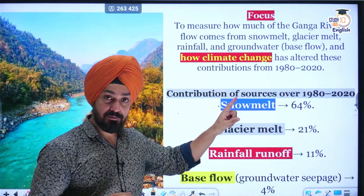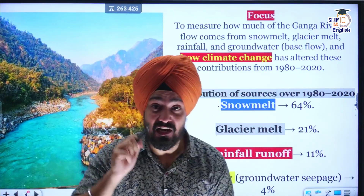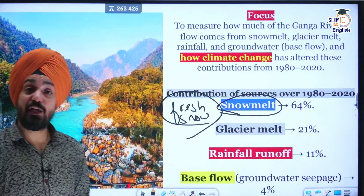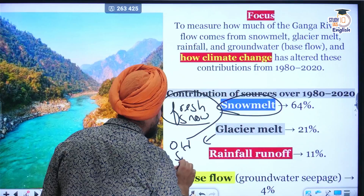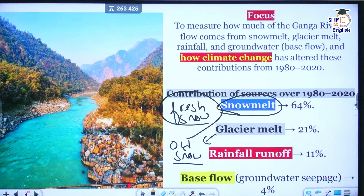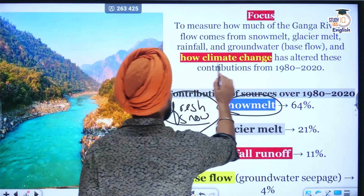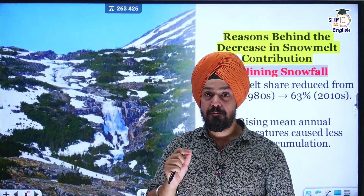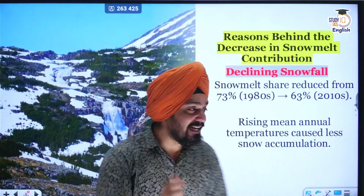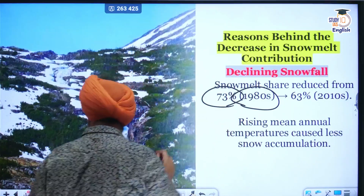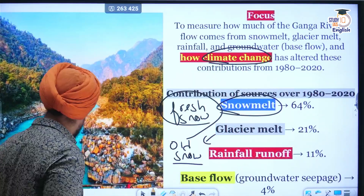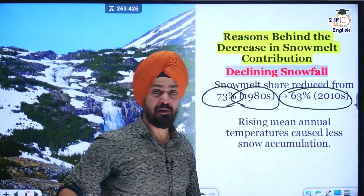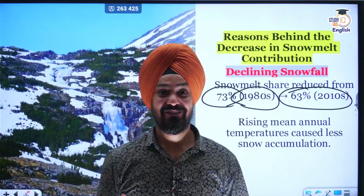The major source — 64 percent of water in river Ganga — comes from the melting of fresh snow, and 21 percent comes from the melting of old snow. Climate change has drastically altered this contribution. The researchers revealed that snow melt contribution is declining. In the 1980s, the snow melt share was 73 percent, but after 2010 the share declined to only 63 percent from snow melt, meaning there is less fresh snow present on Gangotri glacier.